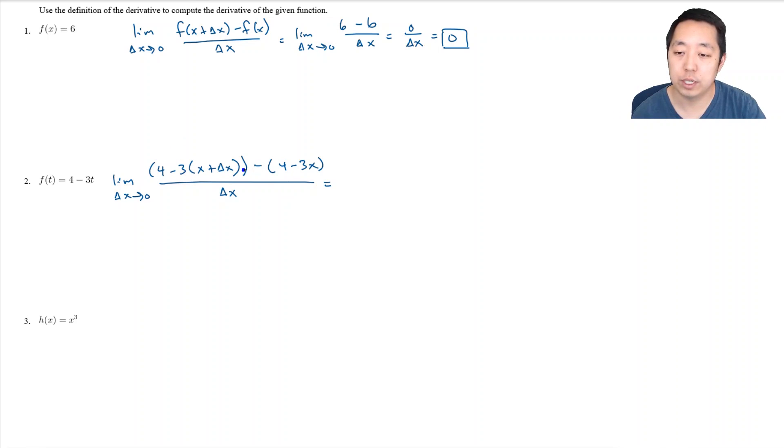So I'm going to distribute this three and distribute all the negative signs. So the top is going to be four minus three x minus three delta x, by distributing the minus three to the x and delta x. This is going to be a minus four here, and this is going to make this minus a negative three x a plus three x over delta x.